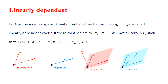The next definition is linearly dependent. Let V be a vector space over a field F. A finite number of vectors V1, V2, ..., VN are called linearly dependent over the field F if there exist scalars — not all zero — in F such that alpha1·V1 + ... + alphaN·VN = 0. In the graph, one vector lies on the other, so we say V is dependent on U or U is dependent on V. Similarly, when three vectors lie on the same plane, we call those vectors dependent.